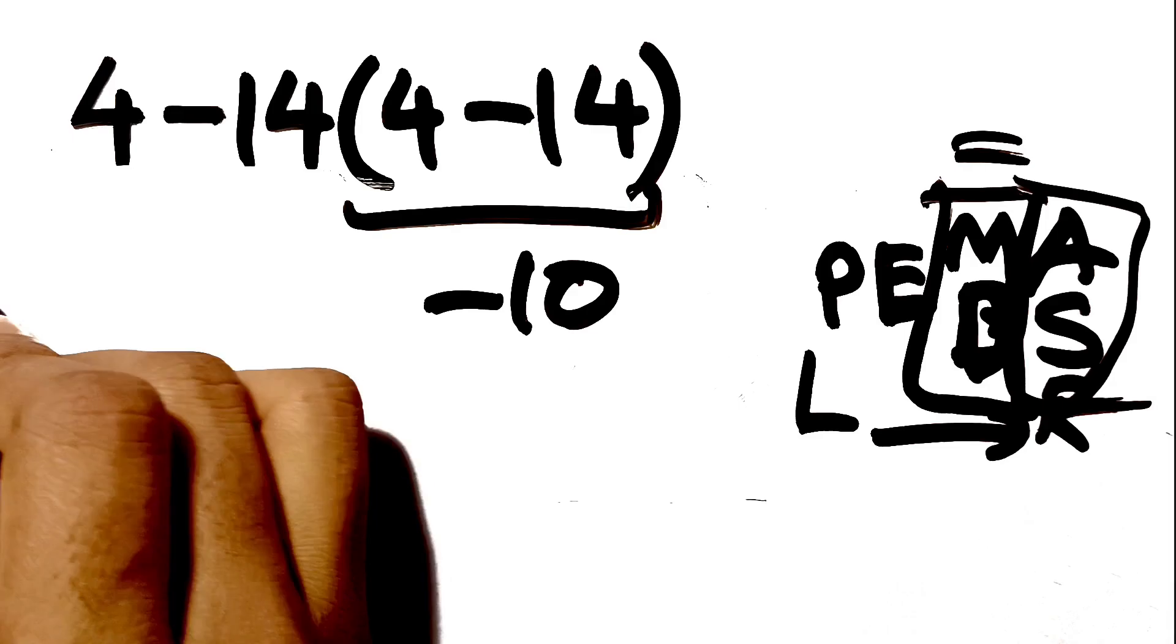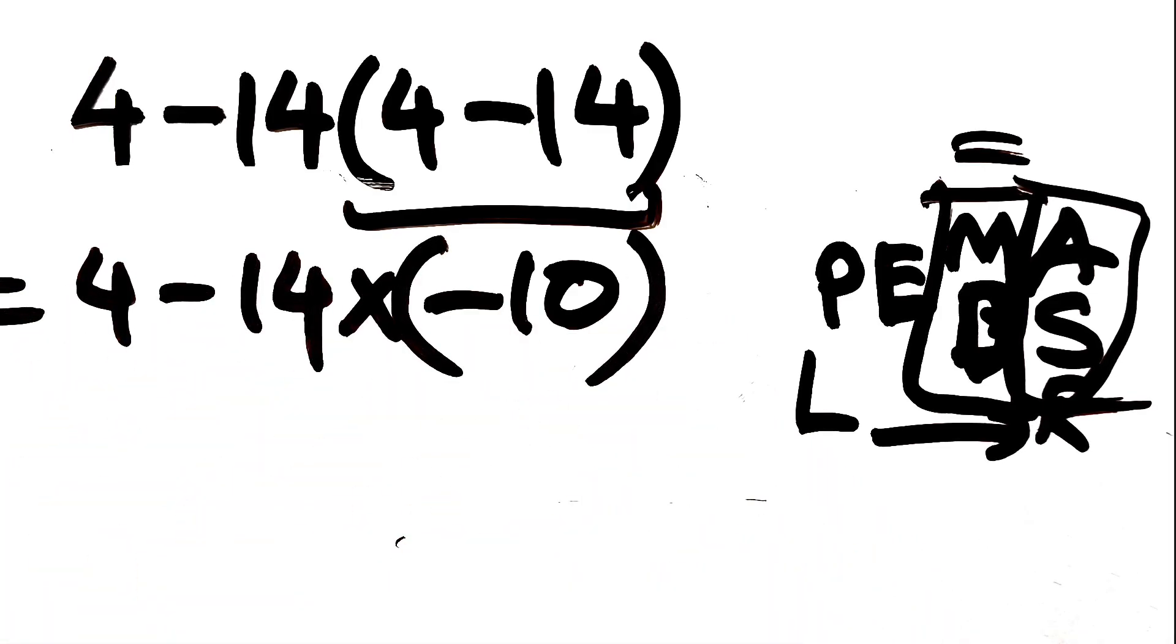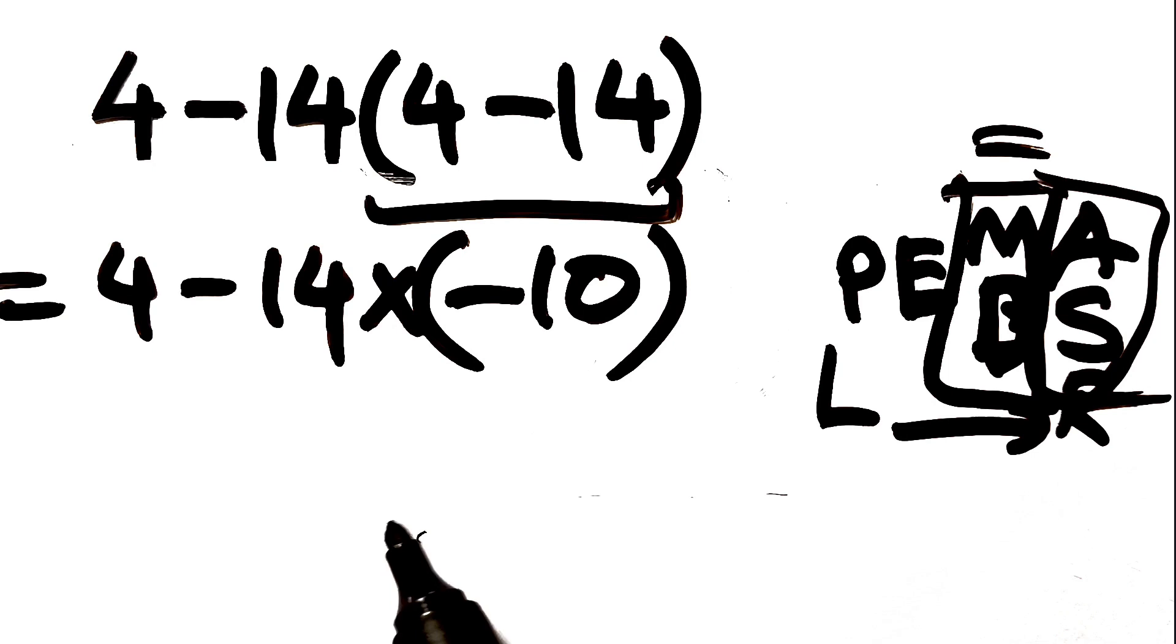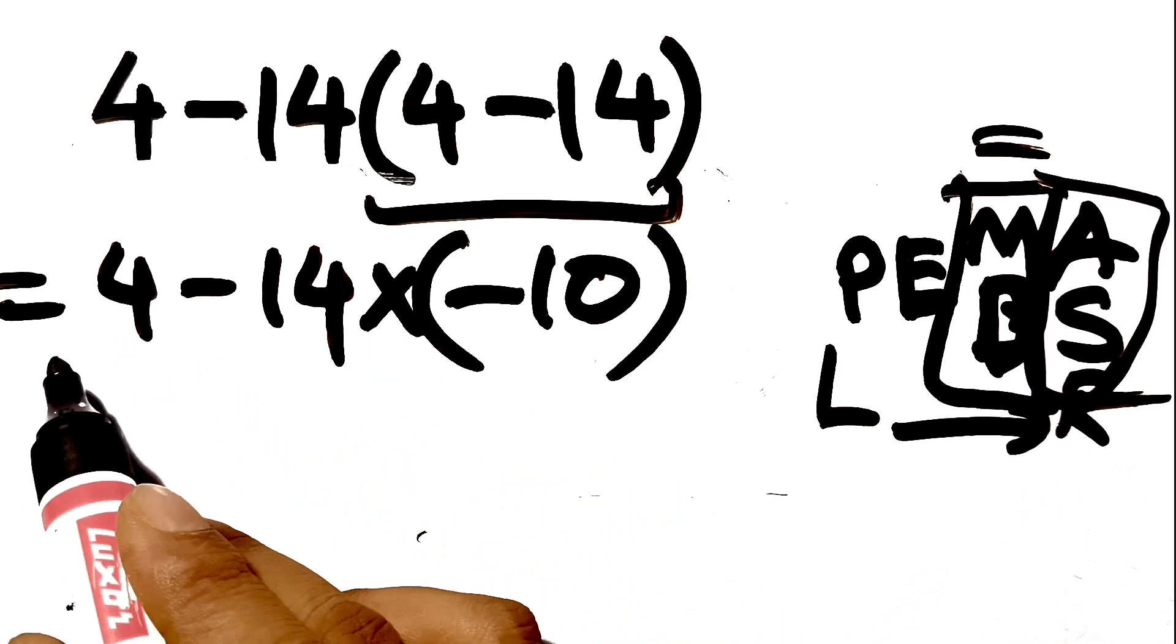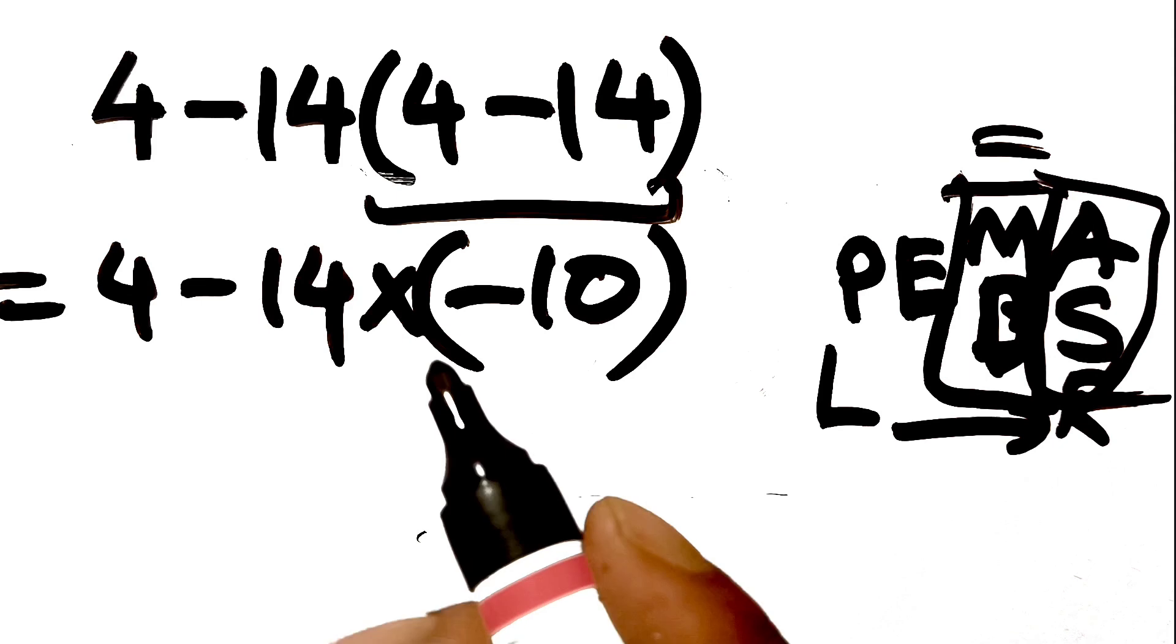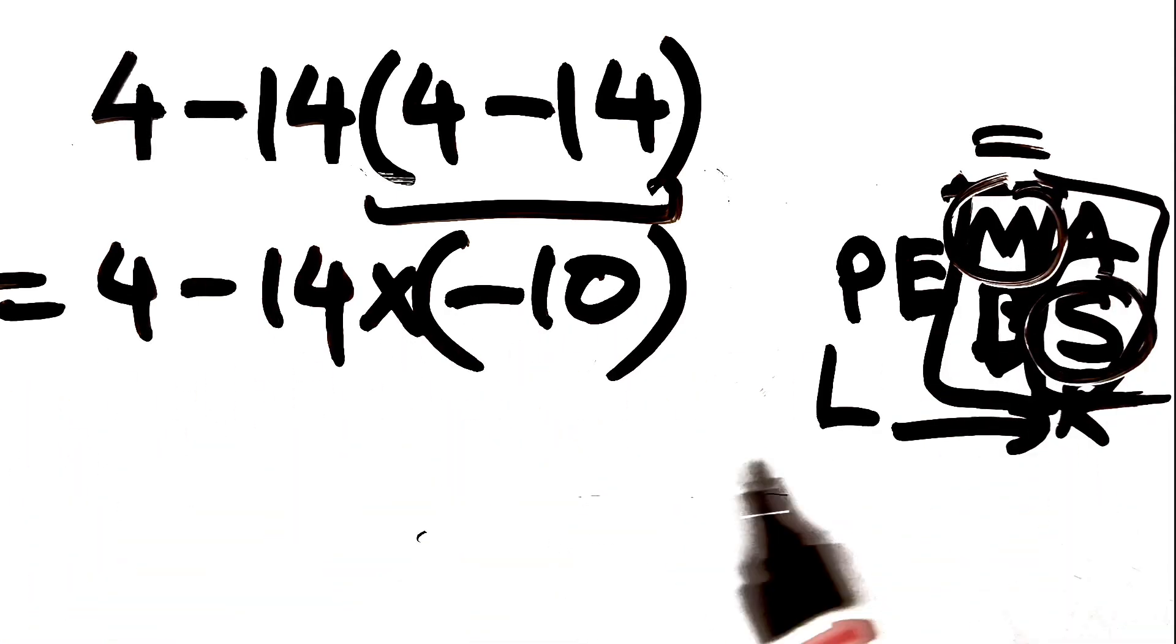So the expression becomes 4 minus 14 times negative 10. Now we have one subtraction and one multiplication. If we do the subtraction before this multiplication, it is wrong. Multiplication has a higher priority than subtraction, so first we have to do this multiplication.